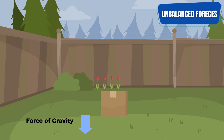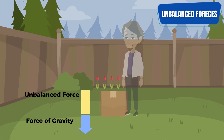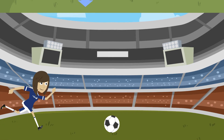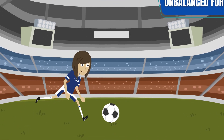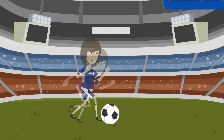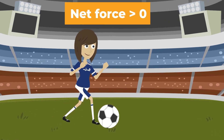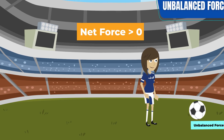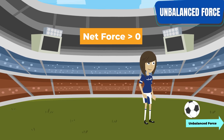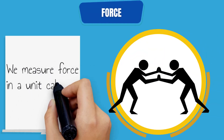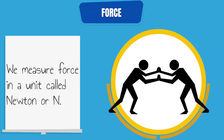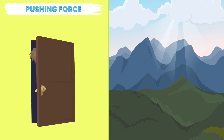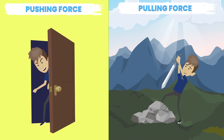If one force in the pair is greater, then it is an unbalanced force. When an unbalanced force is applied to an object, the net force is greater than zero. This causes a change in the object's motion toward the greater force. We measure force in a unit called Newton, or N. This unit simply tells us how much of a push or pull is applied to a system.